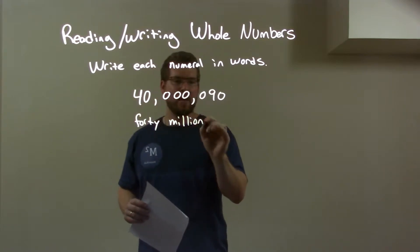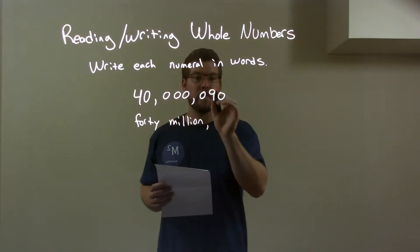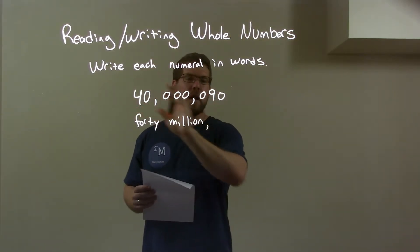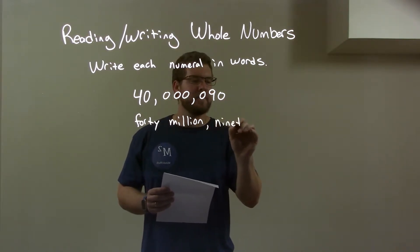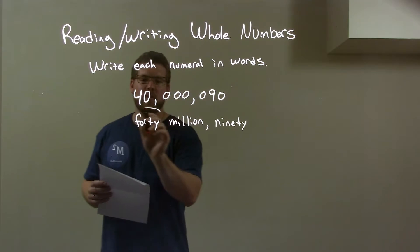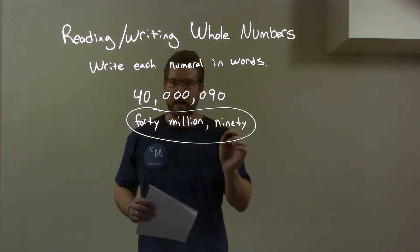Then we don't see anything else until we get to this 9. If we ignore everything else, we just have this. This is 90. So we have 90. And that's it. We have our final answer here of just 40 million 90.